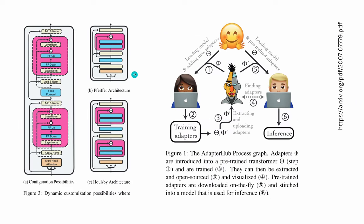There are two famous adapter architectures. We have the original Houlsby architecture with two adapters in each layer, and then the Pfeiffer architecture with just one adapter — it was found that one is sufficient for the same performance. Let me show you the training process and the benefit it provided.